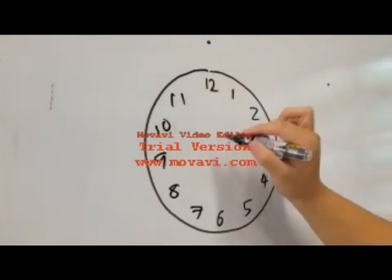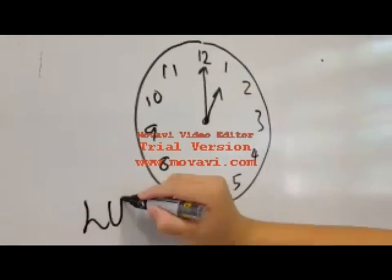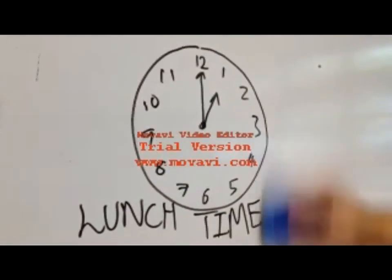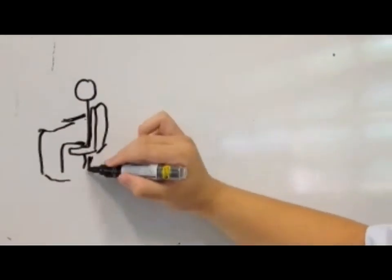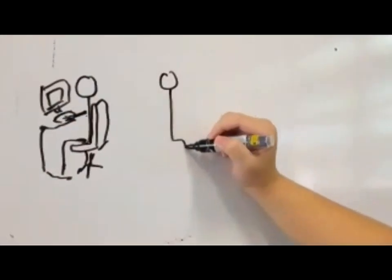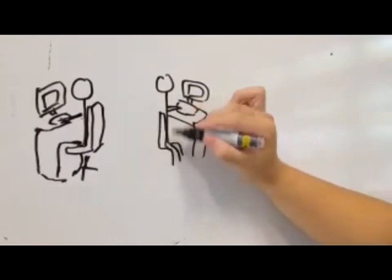It is now 1pm in the afternoon, and it is lunch time. At the office, Jack and his colleague, Bob, were sitting at their desks, and they began to decide where to go for lunch.